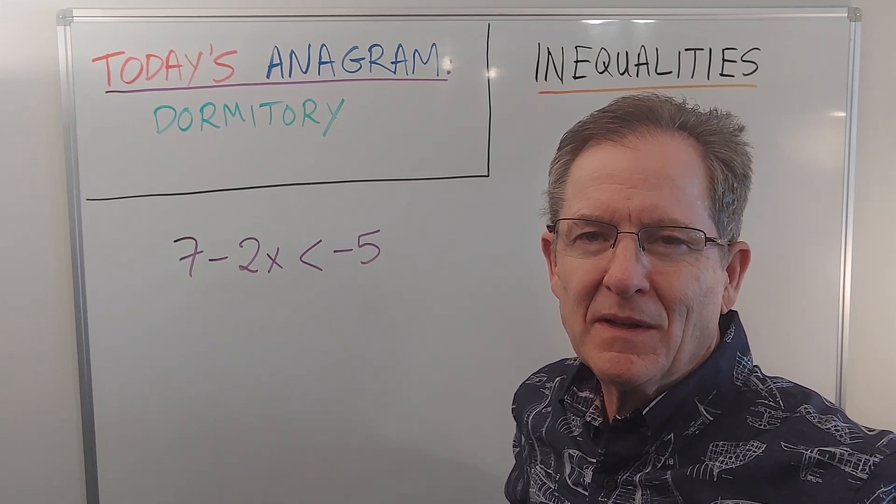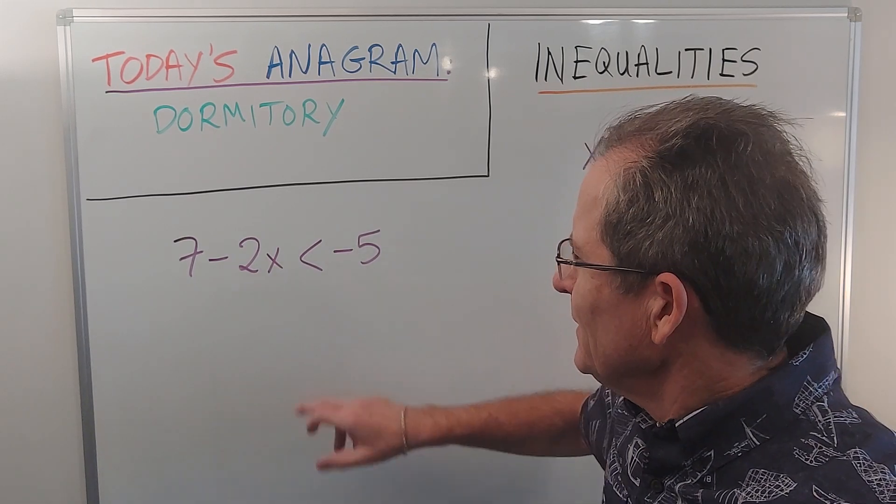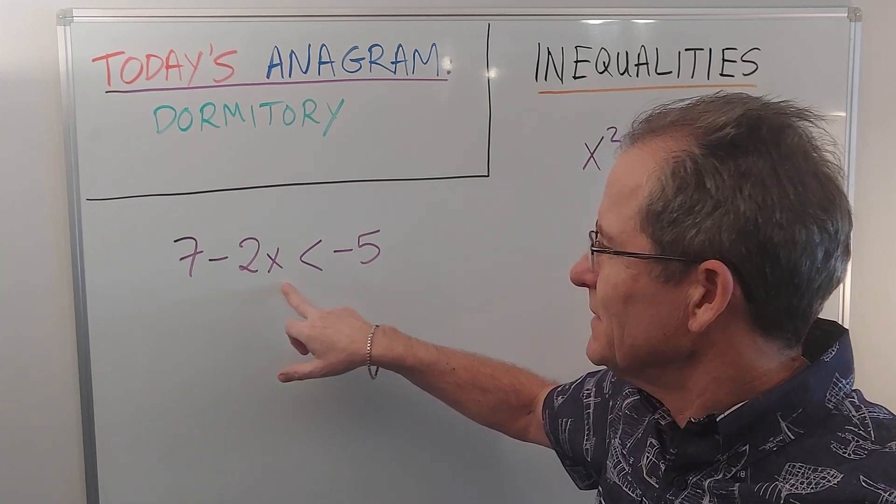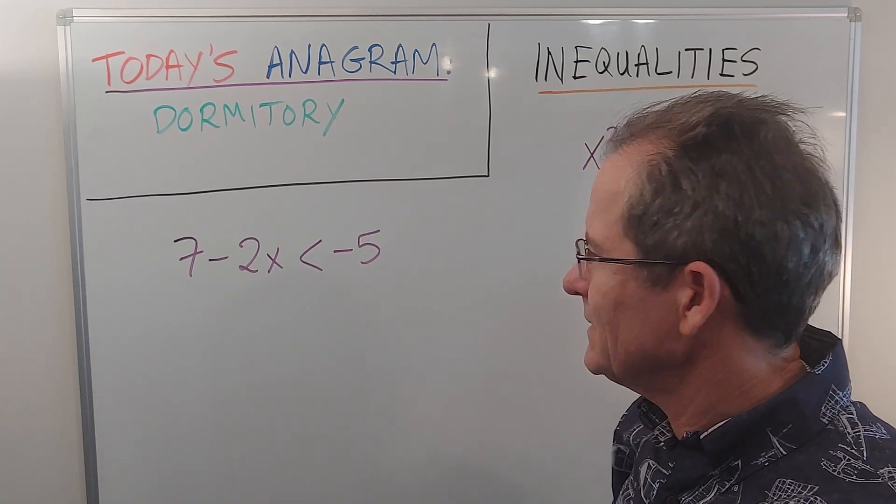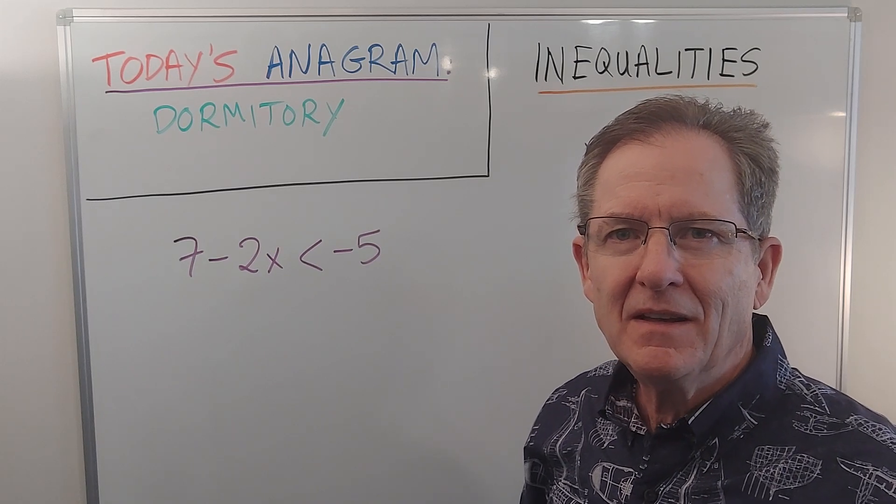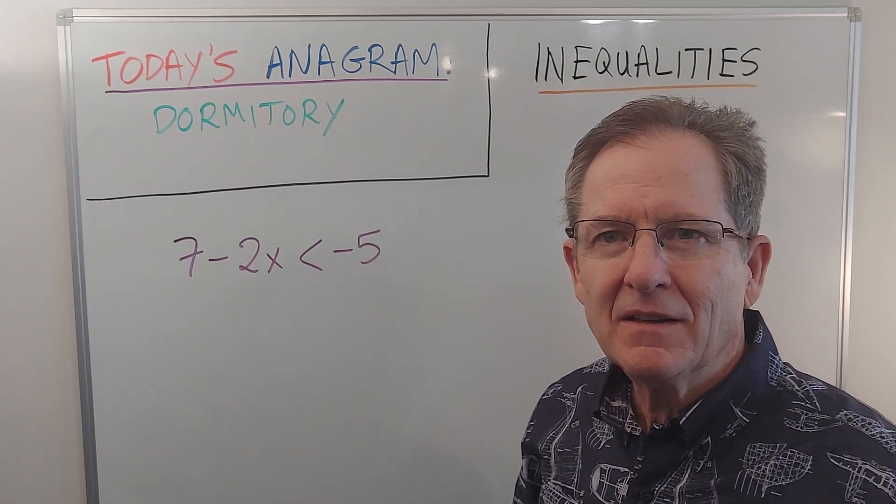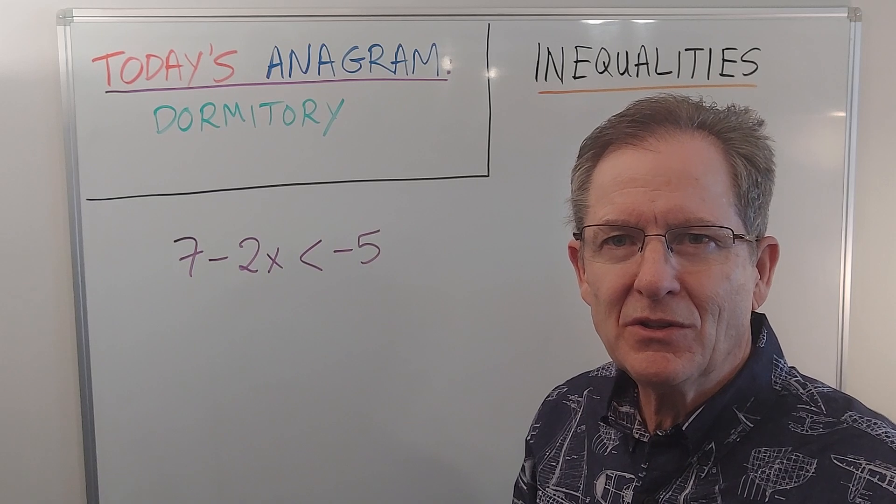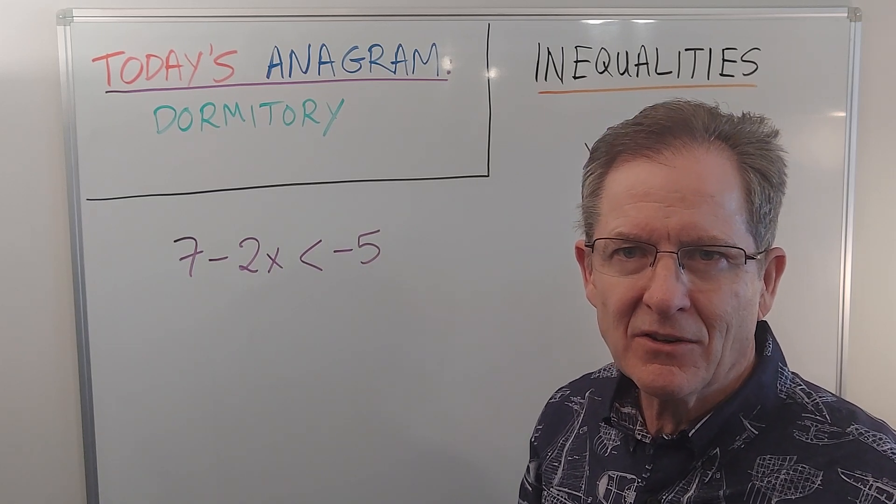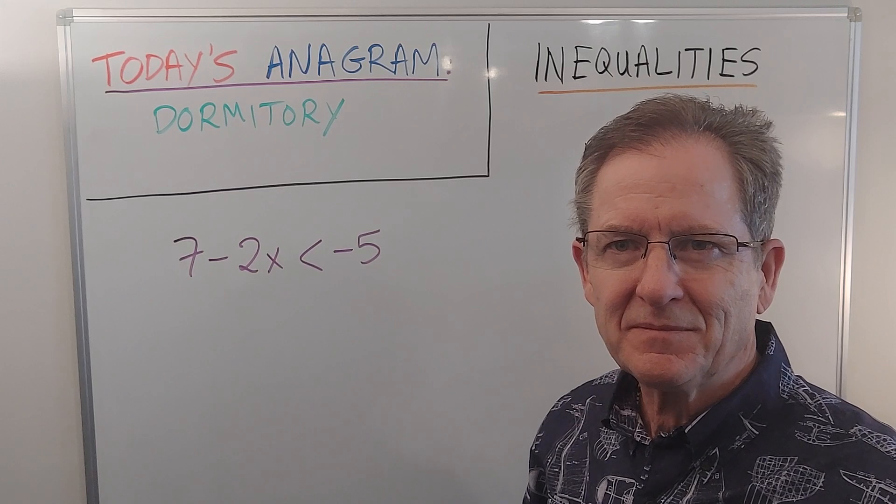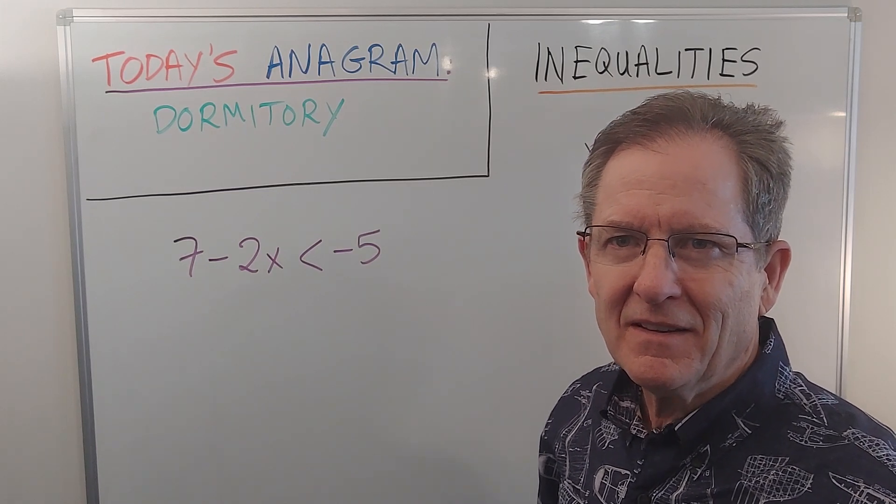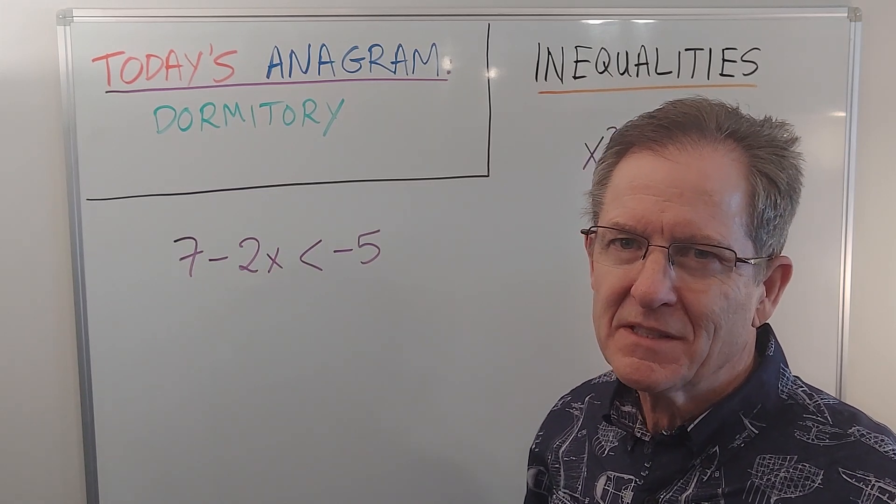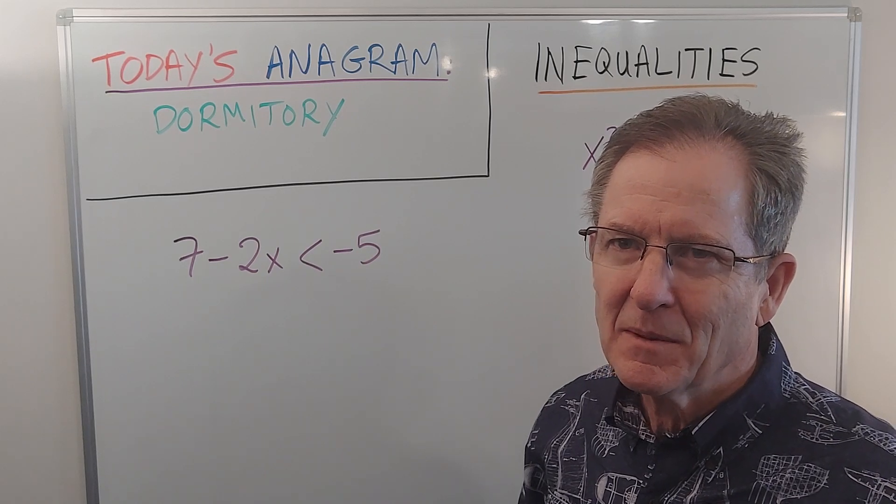Let's look at this example first: 7 minus 2x is less than negative 5. Can you do that in your head? What is the solution? What is x less than or greater than? You might come up with the number six, I'm just guessing. But let's work it out.